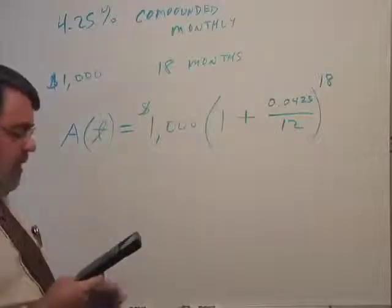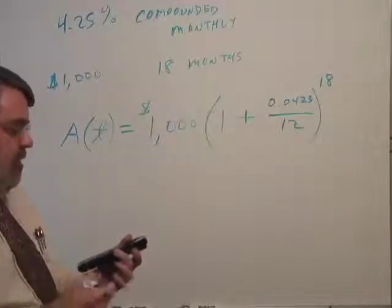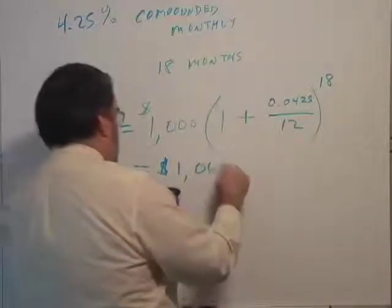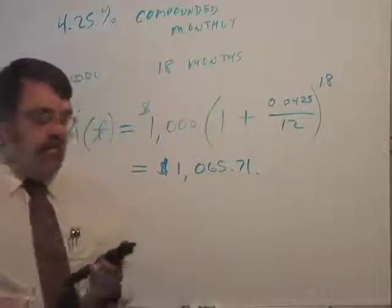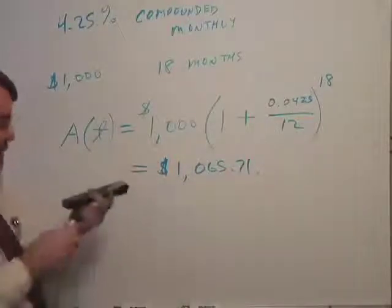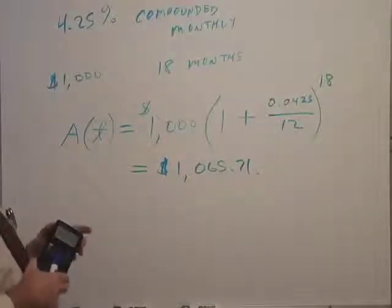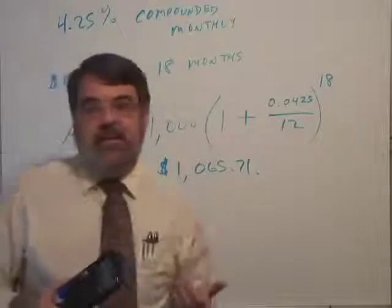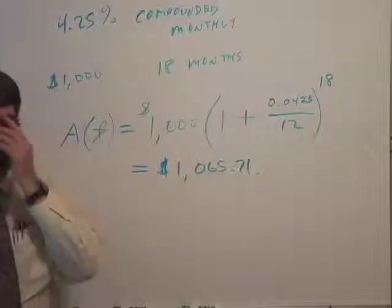Now if I multiply that times a thousand and hit equal one more time, I get $1,065.71. And this time it rounds up to 71 cents. So it would be natural to go to two decimals on a dollar amount because you have dollars and cents. So that's what this is going to be worth after 18 months. You'll have earned almost $66 on that in interest.